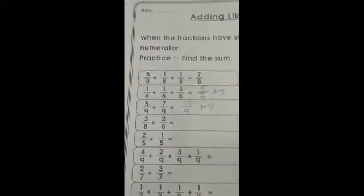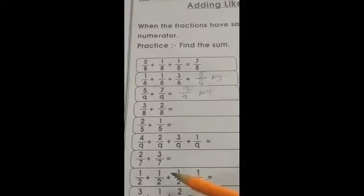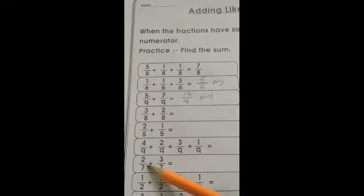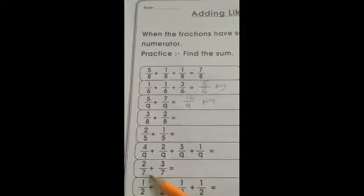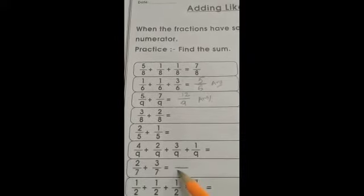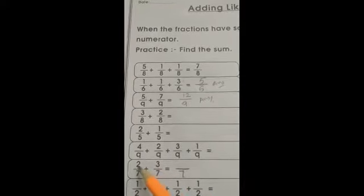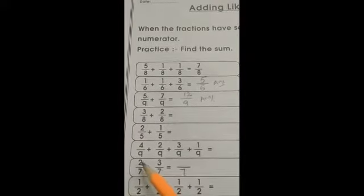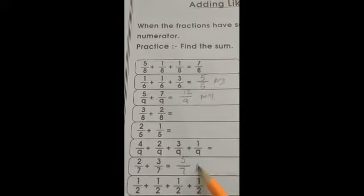I will pick and do some questions randomly. Next question: 2 upon 7 plus 3 upon 7. The denominator is 7, so 7 stays as it is. Now add 2 plus 3: keep 2 in your mind and count after 2 — 3, 4, 5. Write 5 over there. This is your answer.